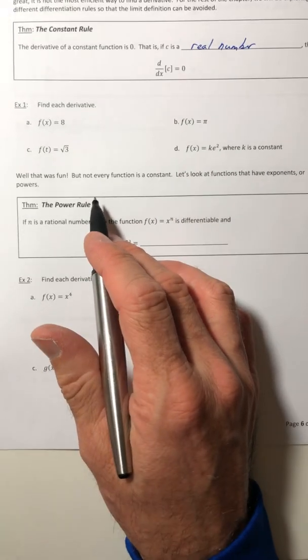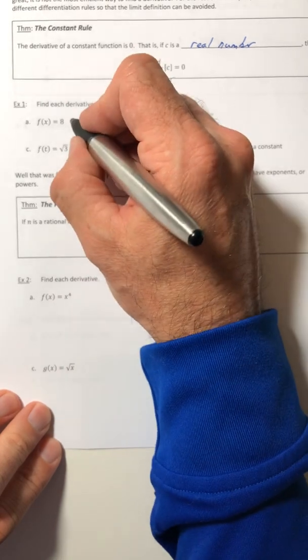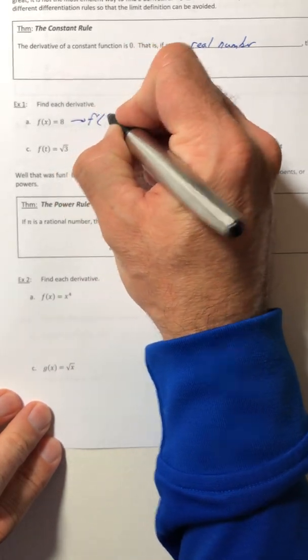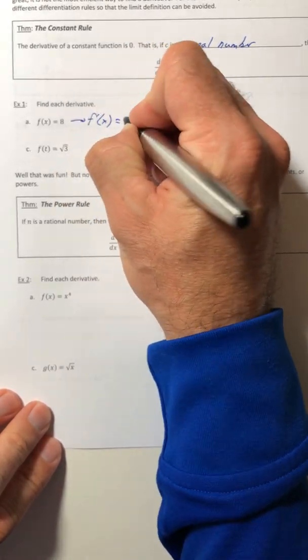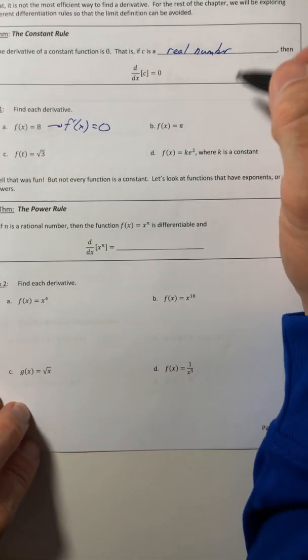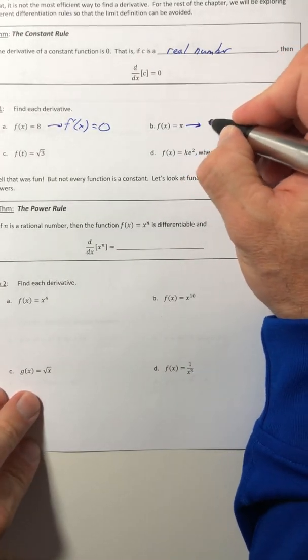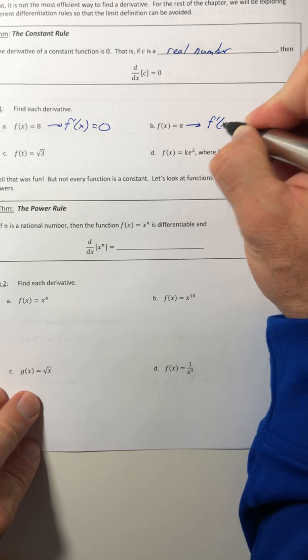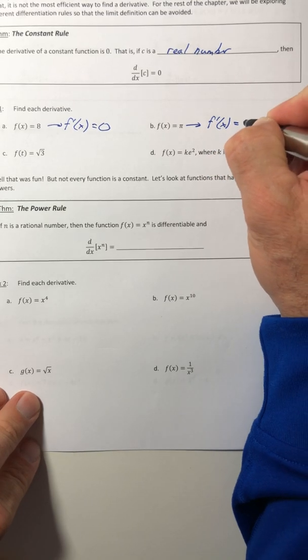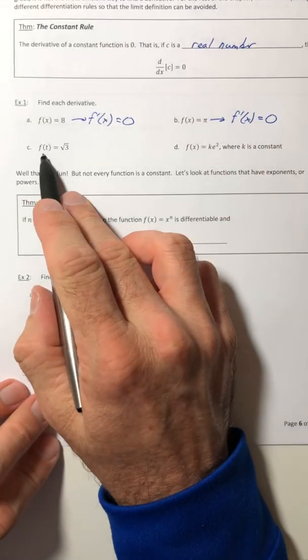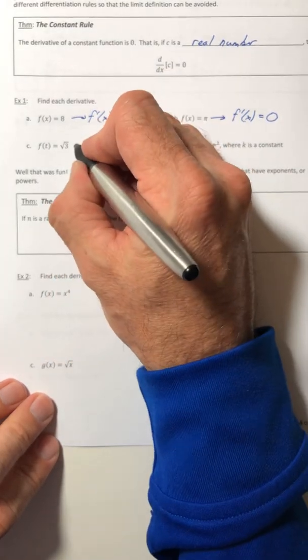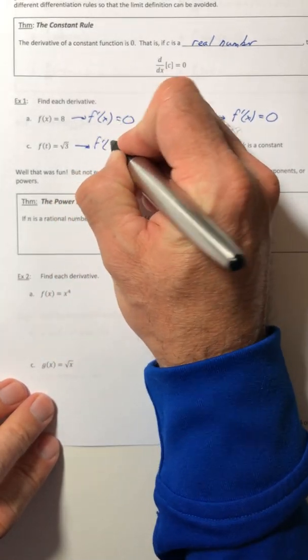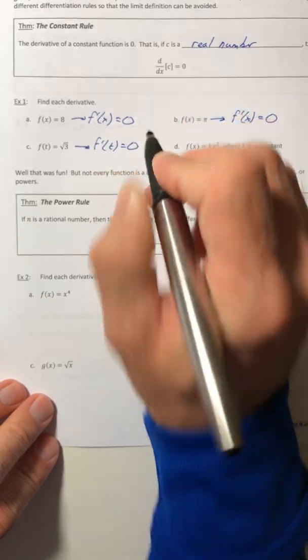So example one, find each derivative. Eight is a constant, so that derivative is zero. Part b, pi is a constant, so that derivative is zero. Part c, f of t equals root three. Well, root three is a constant, so that derivative is zero.